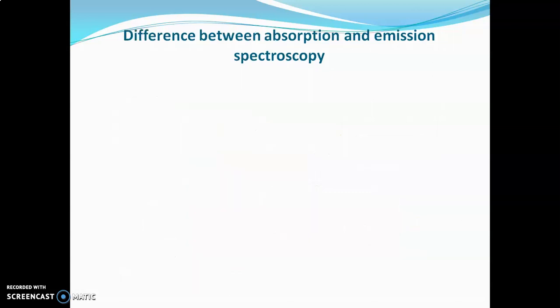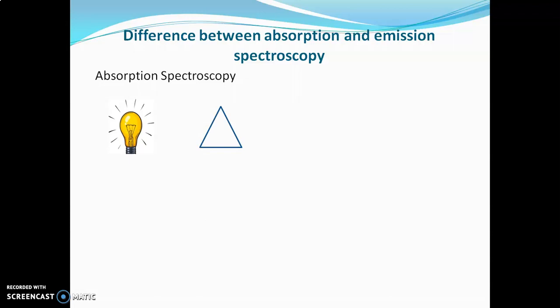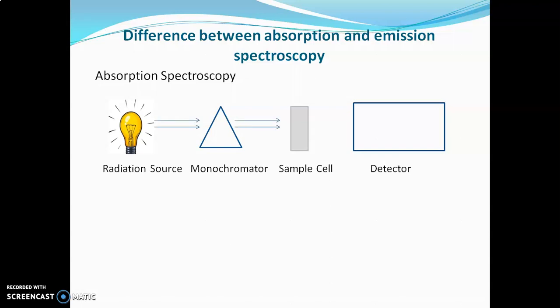Now we'll look at the difference between absorption and emission spectroscopy. In absorption spectroscopy, a radiation source is required — the source from which we get the light or radiations. The radiation source emits light, which passes through a monochromator or filter. Then the monochromatic light passes through our sample, and finally a detector is placed there which detects the transmitted light, and we get the UV-visible absorption spectrum.